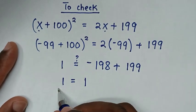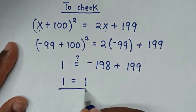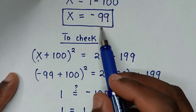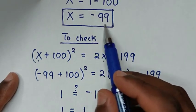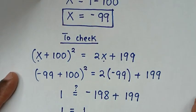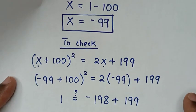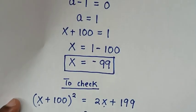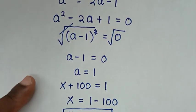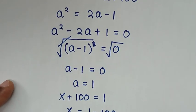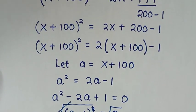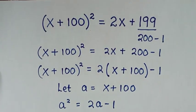Left side and right side are equal, so it's true that the value of x is -99. Thank you for watching — don't forget to subscribe to my channel and see you in the next video!